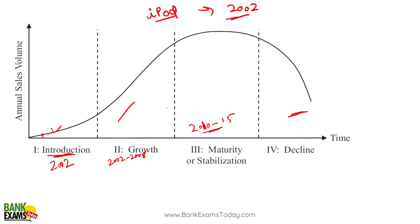In the growth phase, sales are growing really fast. In the maturity stage, sales numbers are stable. In the decline stage, sales numbers are down.